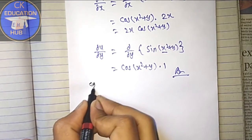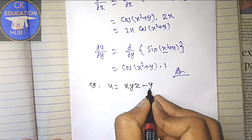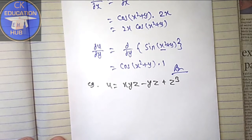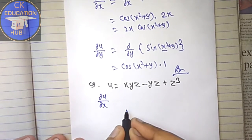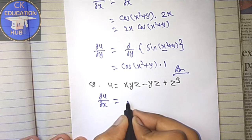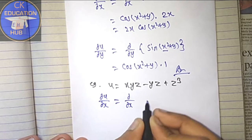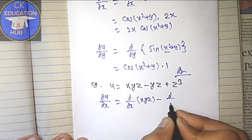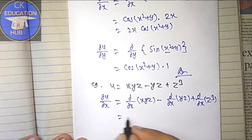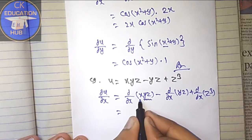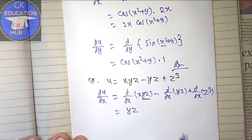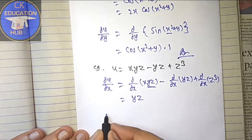Now take an example of three variables: u = xyz - yz + z³, where x, y, z are three independent variables. We will differentiate it partially with respect to x, treating y and z as constants. So del u / del x = del/del x(xyz) - del/del x(yz) + del/del x(z³). Since y and z are constants, the derivative of xyz is yz, the derivative of yz is 0, and the derivative of z³ is 0. So del u / del x = yz.